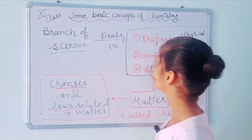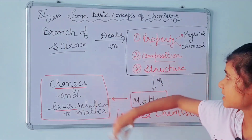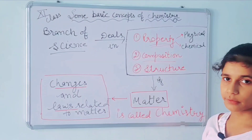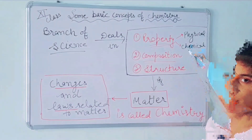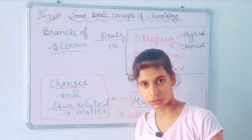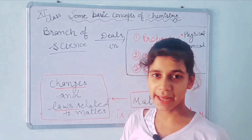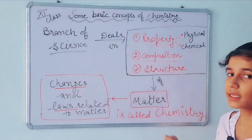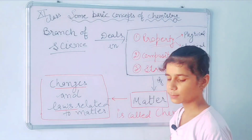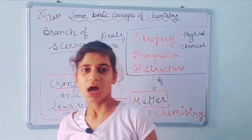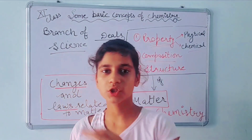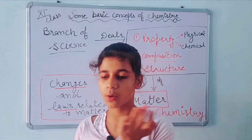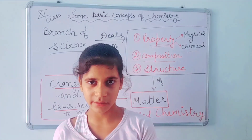Chemistry tells us about properties of matter — physical and chemical both. Our second thing is composition of matter, which means it tells us how much protein is in matter, how much carbohydrate is in matter.